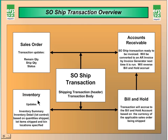The SO ship transaction also updates the inventory system, which includes the inventory summary or the inventory detail if this is a lot-controlled item. This is where you'll see your quantities actually physically reduced, based on the quantity shipped and the bin locations chosen during the SO ship transaction.